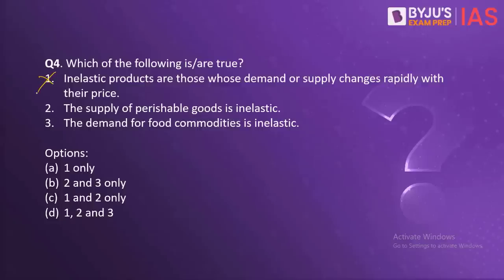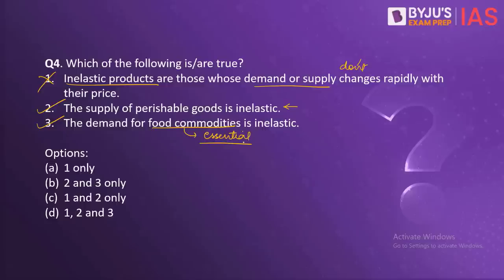So the first statement is incorrect because inelastic products are those whose demand or supply do not change with their price. The second statement is correct, as we have seen in the case of agricultural produce. The third statement is also correct because food commodities are essential — even if the price of wheat is high, the consumer will have to buy it. So the correct answer here is B.